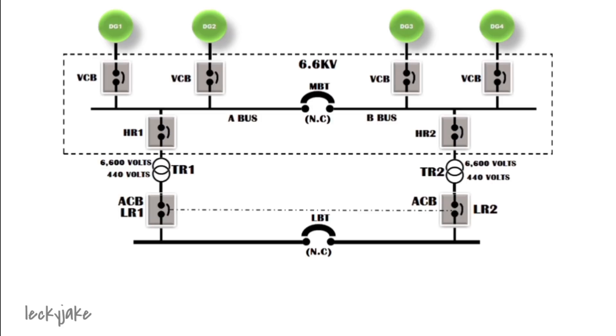Then the 440 bus bar will be connected to an emergency switchboard bus tie. This setup is a little bit different from the other vessels that I have sailed with as they are having two emergency switchboard bus ties. But for this vessel, they are only having one emergency switchboard bus tie. So what you are seeing right now is the 440 low voltage switchboard.